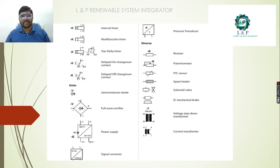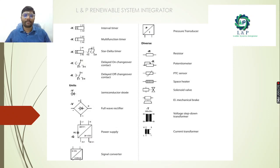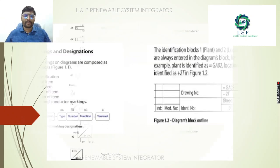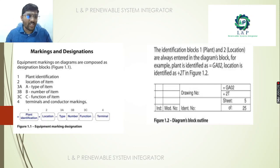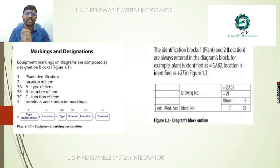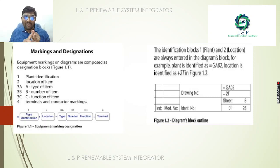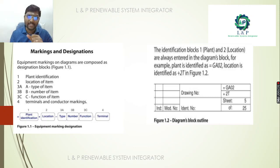We have given abbreviations for ammeters, voltmeters, resistors, sensors, and more. If you have any doubt regarding the symbols, you can refer to this part. Now, the first and foremost thing is how we are going to do marking and designations. For marking, the most important thing is to first identify the plant.